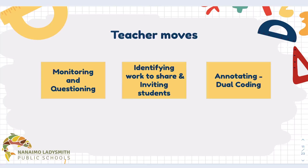The next part is when we get students back together and share the strategies we've identified — we want to be annotating the student's work. We can either do that for the students to clarify their thinking, or we can get the students to do the annotating themselves. This is called dual coding, and it's a great way to activate different parts of the brain and process the information in a different way.